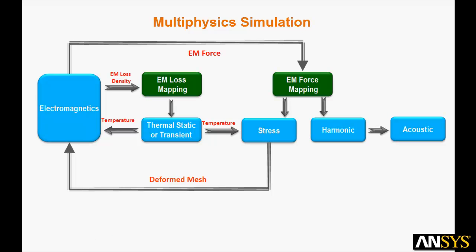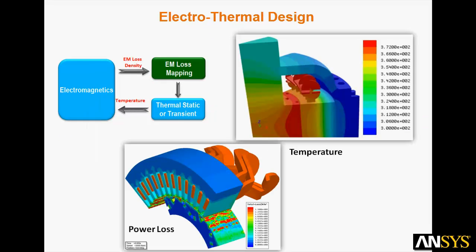For the final example we show comprehensive multi-physics simulation of an electric machine. This flow chart depicts the process whereby electromagnetics is used to drive thermal simulations, stress analysis, harmonic analysis, and finally acoustic noise. The mapping functions are handled automatically in the ANSYS Workbench environment. The first step is electrothermal design. Maxwell is used to simulate electromagnetic fields and the associated electromagnetic power loss density. Automated routines map these losses to the ANSYS CFD Computational Fluid Dynamics Solver for static or transient thermal simulations.